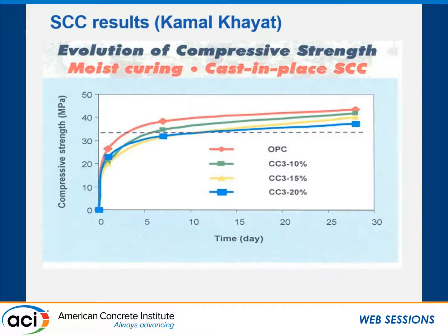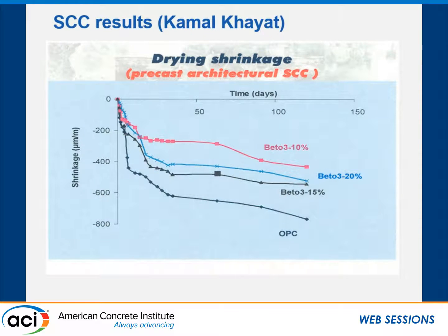Here we can see the difference in compressive strength between the OPC and the 20% replacement mixes. Every time they met the 32 MPa requirement, with a small reduction in compressive strength — but nobody really cares about that because the requirement is met, the mix is a lot cheaper, and we've taken 20% of the cement out. On drying shrinkage, replacing cement reduces shrinkage.